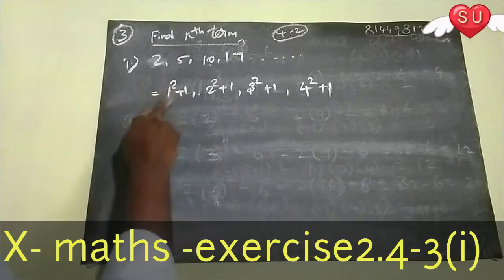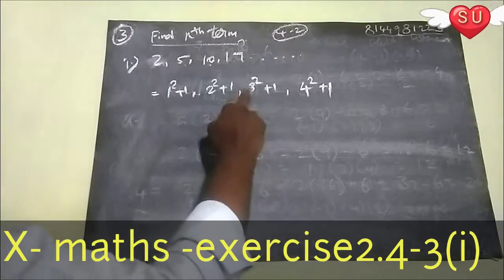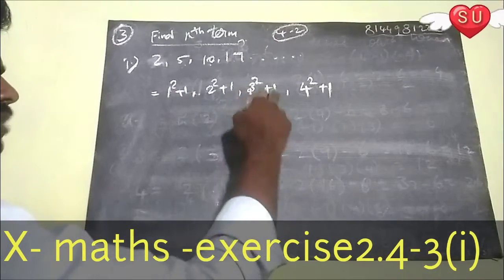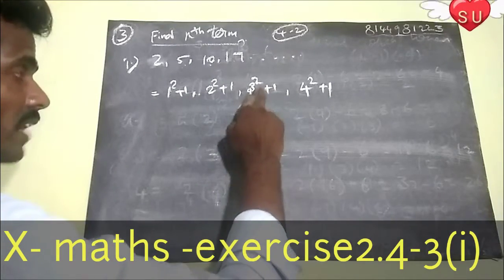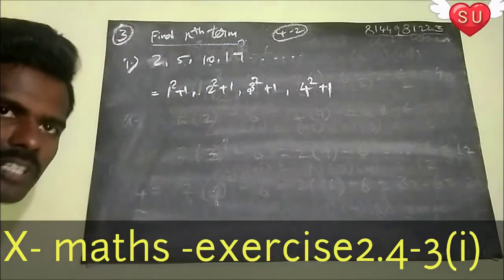1 square is 1, 1 plus 1 is 2. 2 square is 4, 4 plus 1 is 5. 3 square plus 1, 3 square is 9, 9 plus 1 is 10. 4 square is 16, 16 plus 1 is 17.